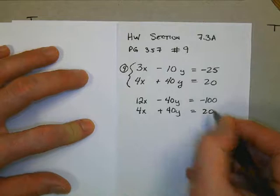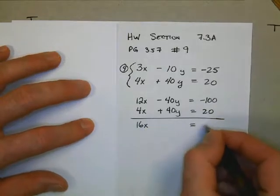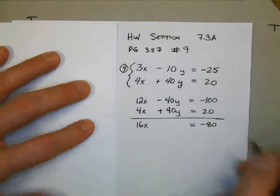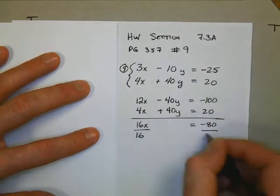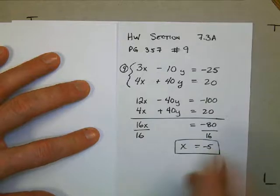I add my two equations up and I get 16x equals negative 80. To solve for x here, I'm going to divide both sides by 16, and x equals negative 5. This is my first variable.